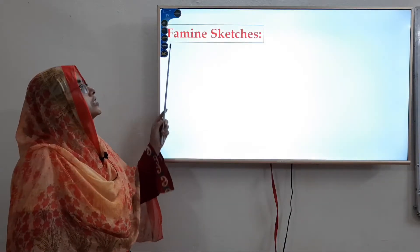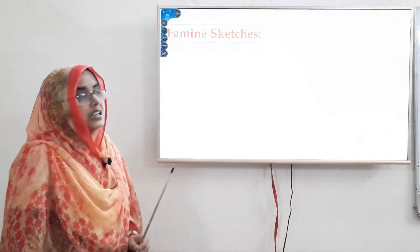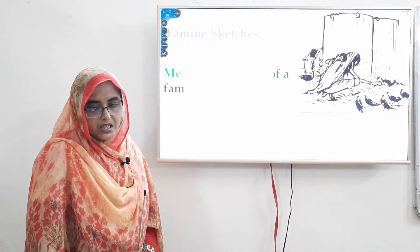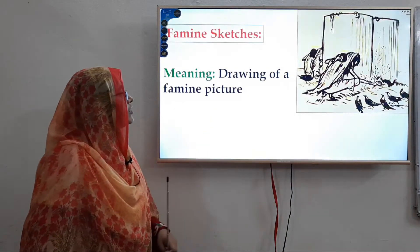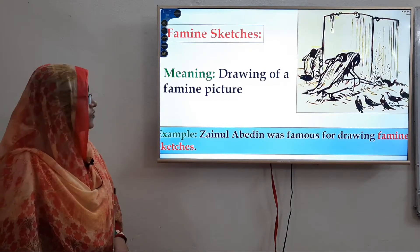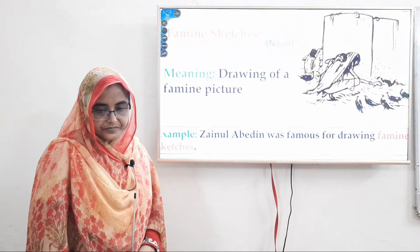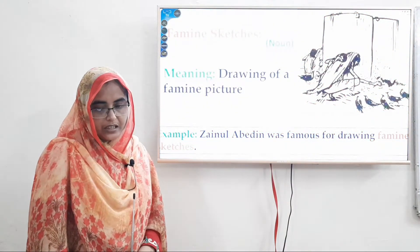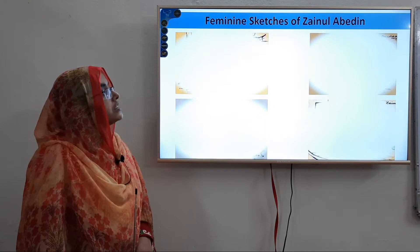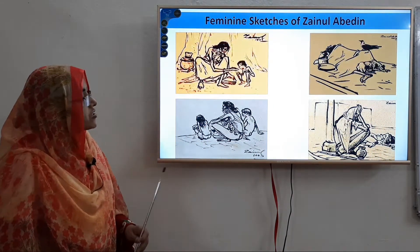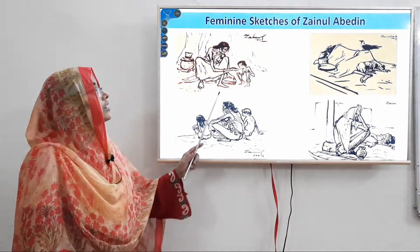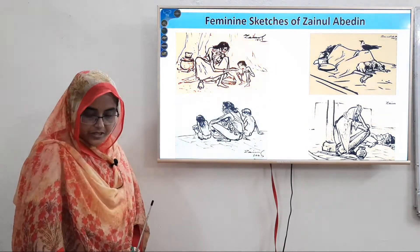Famine sketches — clear pronunciation: famine sketches. That is done by Jainul Abedin. Such famine sketches are world famous — drawing of a famine picture. Sentence: Jainul Abedin was famous for drawing famine sketches. It is also a noun form. Let us see some famine sketches sketched by Jainul Abedin — the series of famine sketches. In our textbook we also have these famous sketches.